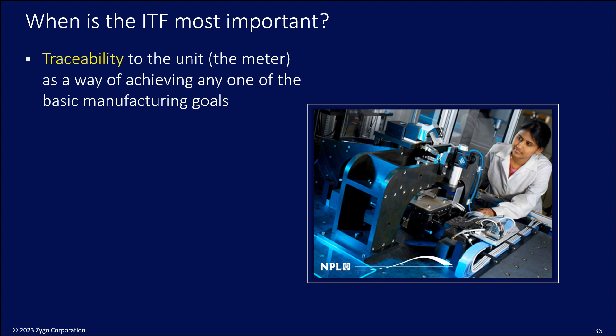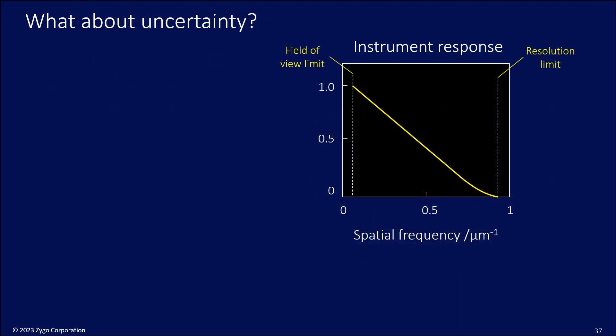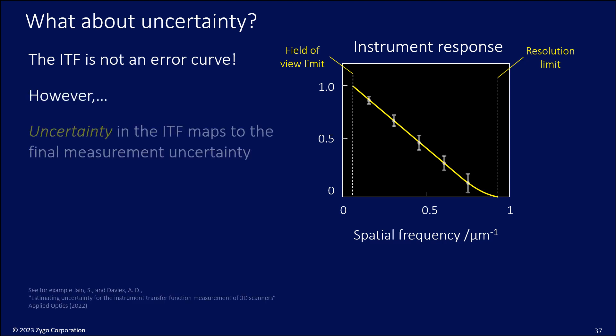So what about the uncertainty? Is this a map of measurement errors that has to be put into an uncertainty budget? And I would say no, the ITF is not an error curve. It's simply a description of how the instrument responds. The uncertainty comes in when we talk about the uncertainty in the ITF. How well do we know the ITF? That's what you have to include in your uncertainty budget. The ITF, in some sense, is part of defining the measurand. How well you measure the measurand is determined by the uncertainty in the ITF and any other filtering that you apply.